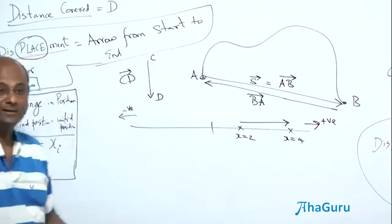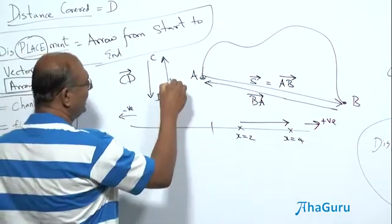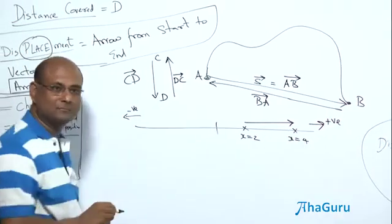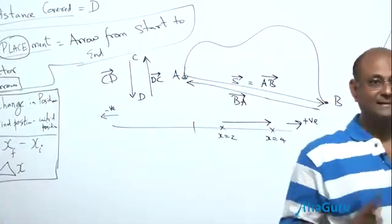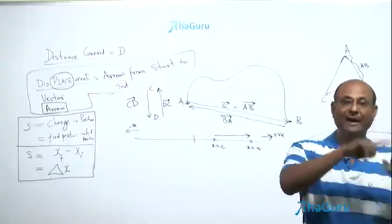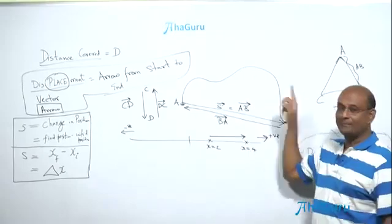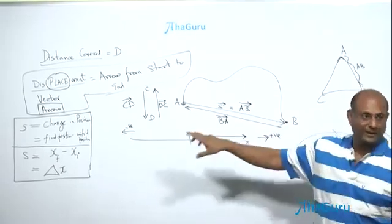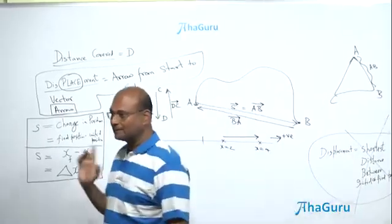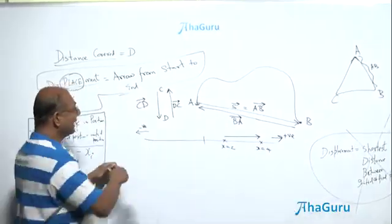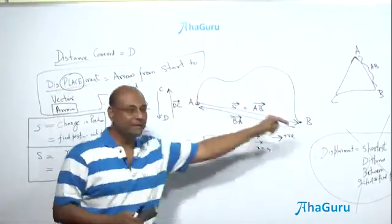If going from D to C, write DC with an arrow. The arrow is important because it tells you it is an arrow, and it also tells you from where to where — it tells you both. Displacement is an arrow from A to B, or B to A — always from start to finish. You may have traveled in any direction; it doesn't matter. It is a simple arrow from the beginning to the end.